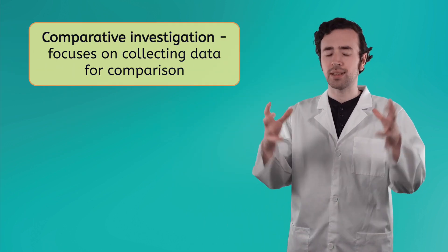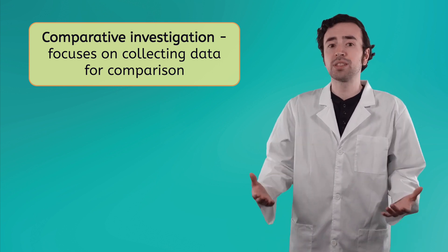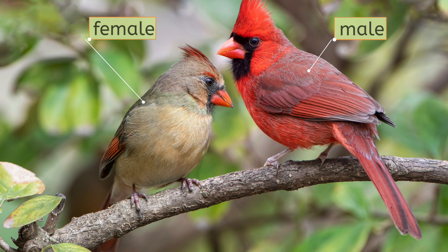So, what if I have a question about how two or more things are similar or different? For that, I would use a comparative investigation, which focuses on collecting data for comparison. Some questions comparative investigations can answer are: how is the DNA of dogs similar or different from that of wolves? Or how does the appearance of female cardinals compare to that of male cardinals? What are some examples of questions you think can be answered with comparative investigations? Write down your thoughts in your guided notes. Comparative investigations are great for examining broad connections between living things.